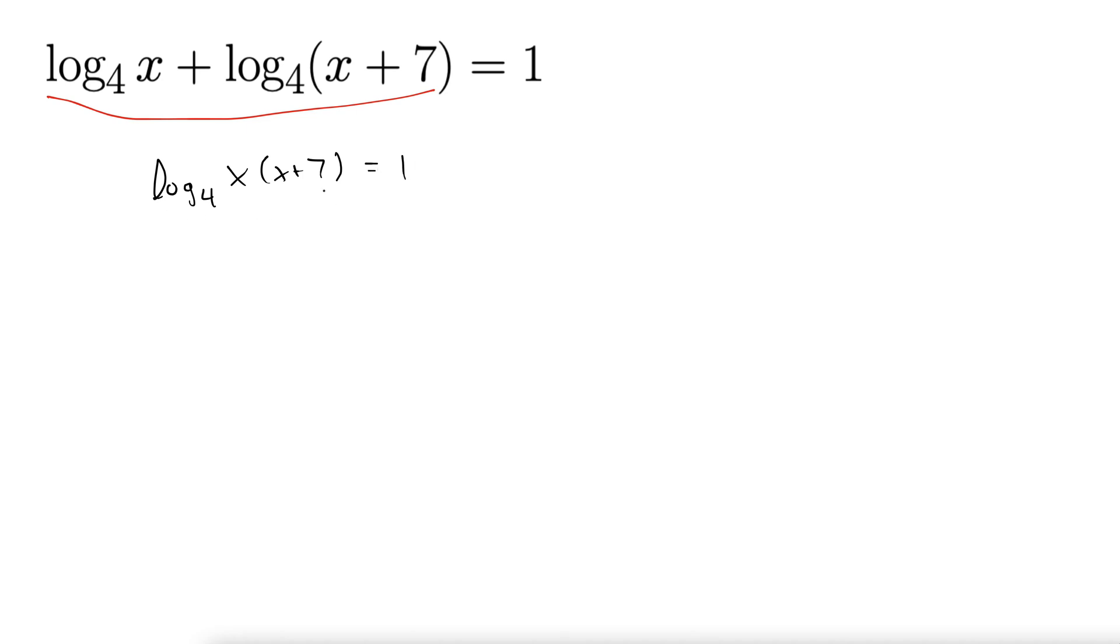Once we have this written as a single logarithm, we convert to exponential form. So we take our 4 around to the exponent, back inside for the equals.